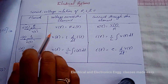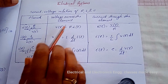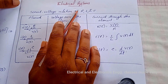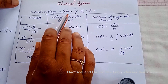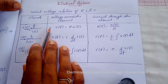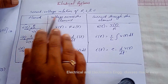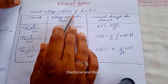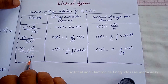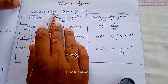Hello everyone, welcome to the new class. Today's class is about electrical systems, that is, the models of electrical systems used in control systems. The models of electrical systems can be obtained by using resistor, inductor, and capacitor.